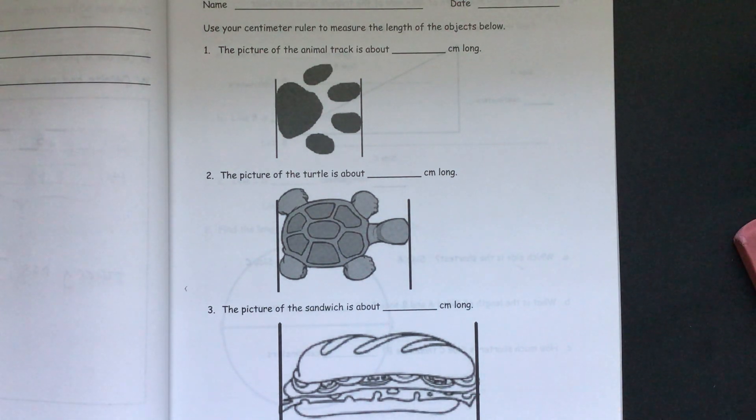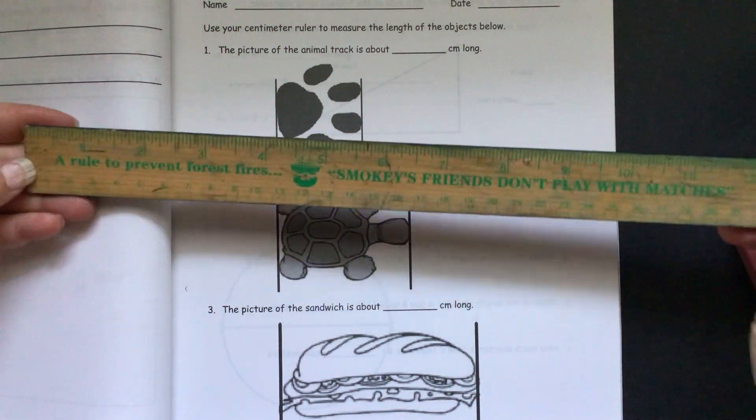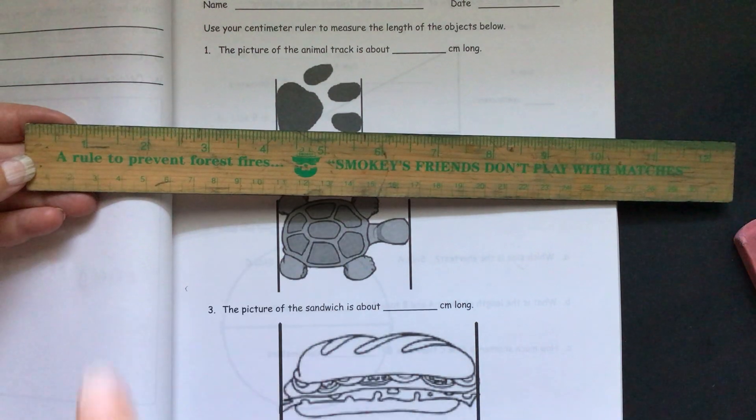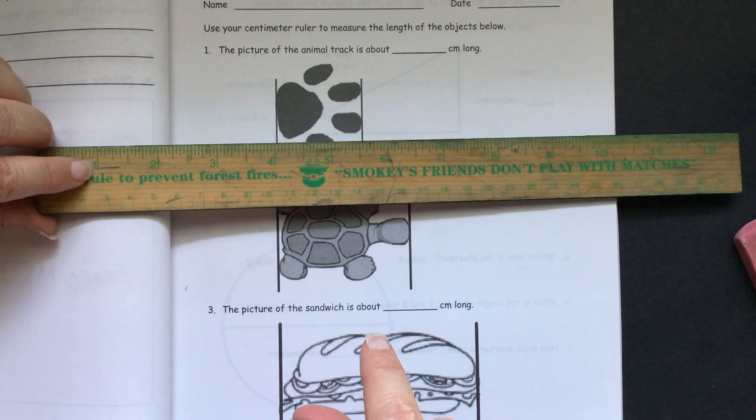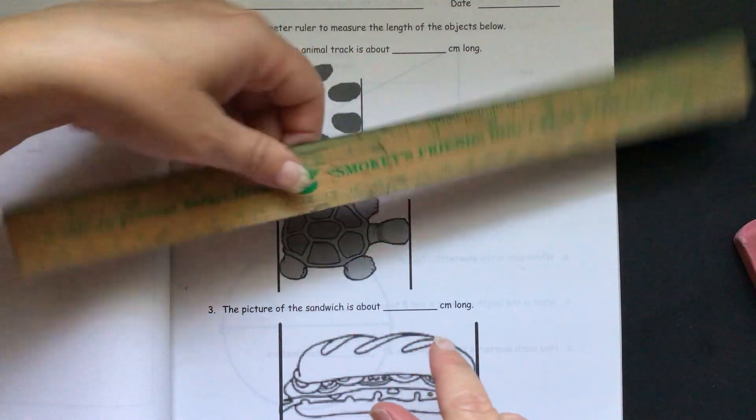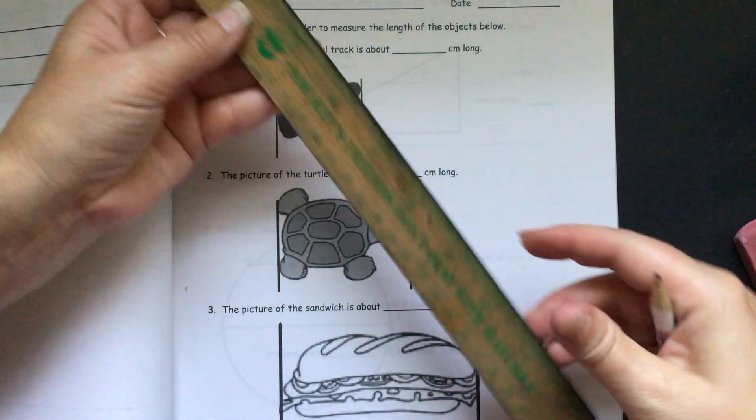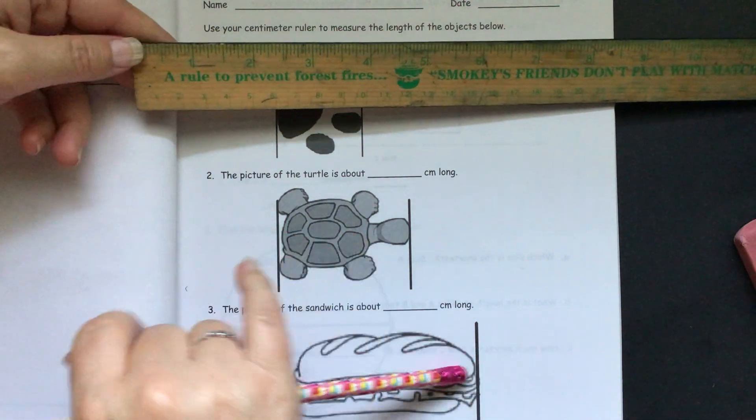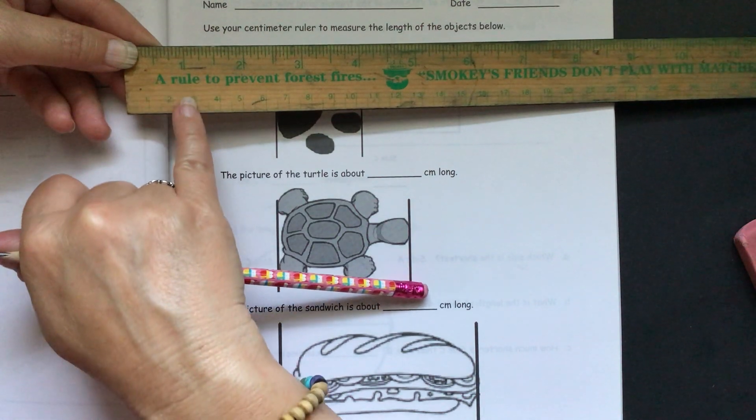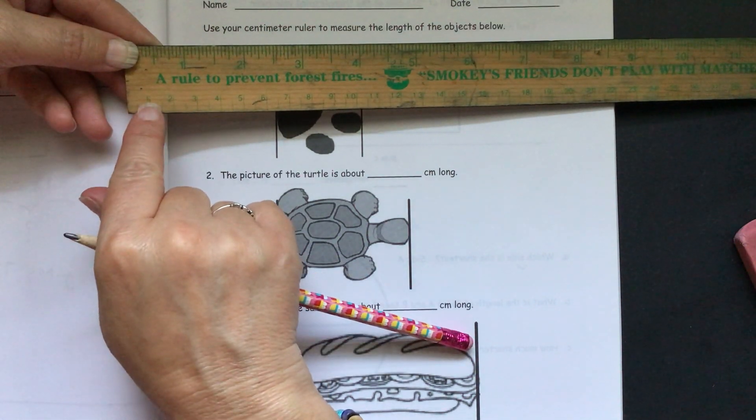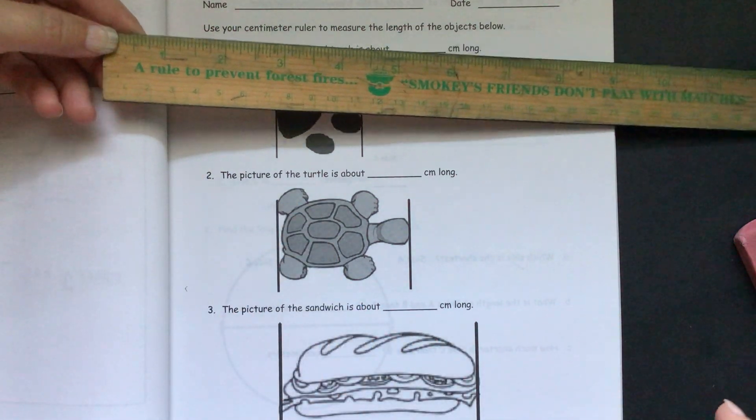In regular public schools, a lot of kids have rulers that look like this. They have the inches on one side. There's a lot of space between each inch. You can see with the big numbers there. But we want to use the centimeter side where there's just like a pinky finger in between each of the centimeters. I'm going to use a different ruler that you can see better on.